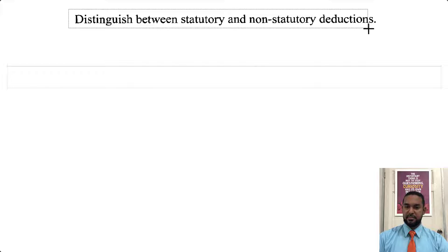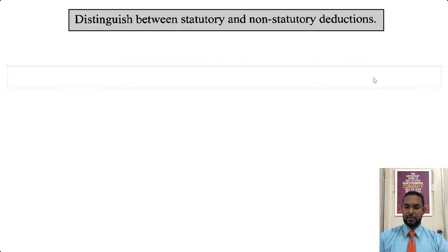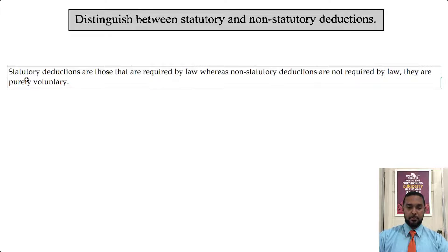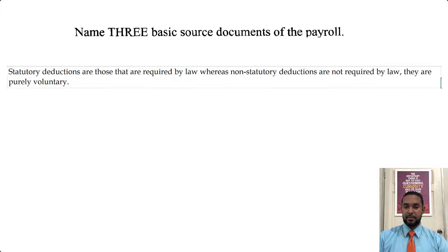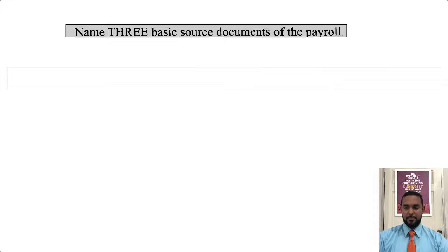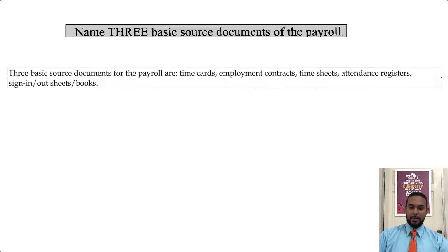The final parts: we need to distinguish between statutory and non-statutory deductions. Statutory deductions are required by law; non-statutory deductions are not required by law — they are voluntary. And we need to name three basic source documents for payroll. Examples include: time cards, employment contracts, time sheets, attendance registers, and sign-in or sign-out sheets or books.